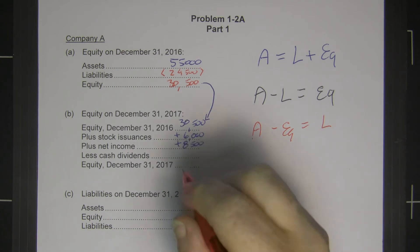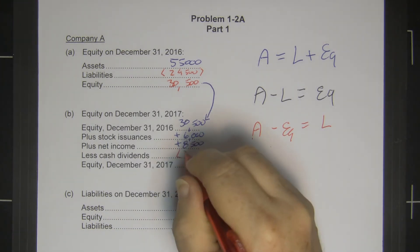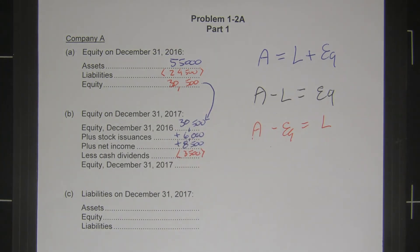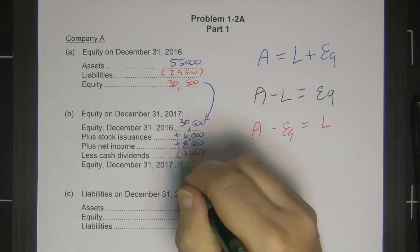Our cash dividends this year were $3,500. So our equity at the end of the year is $30,500 plus $6,000 plus $8,500 minus $3,500, or $41,500.